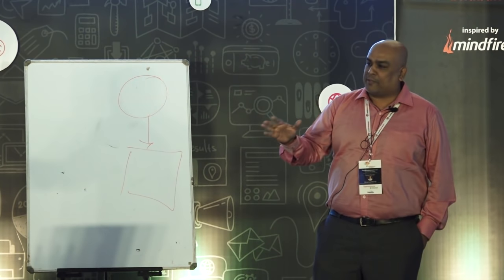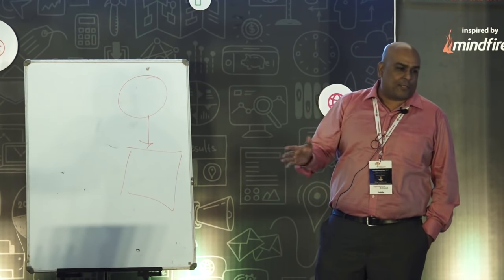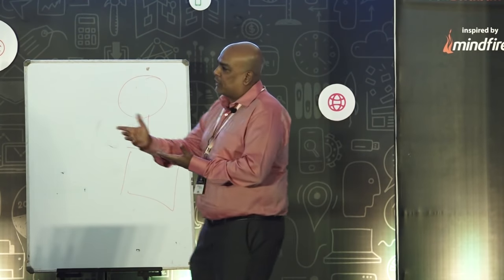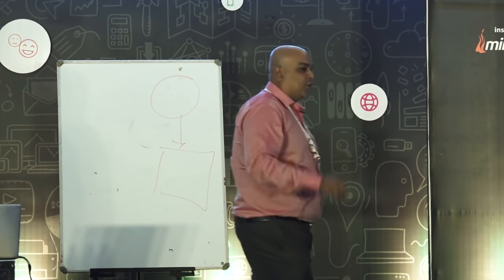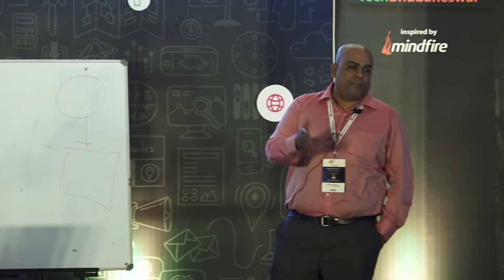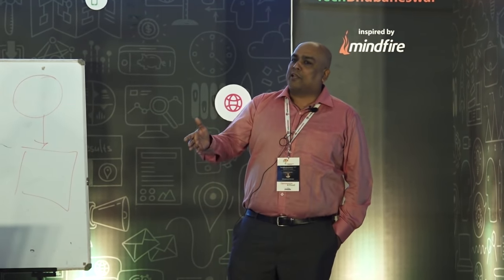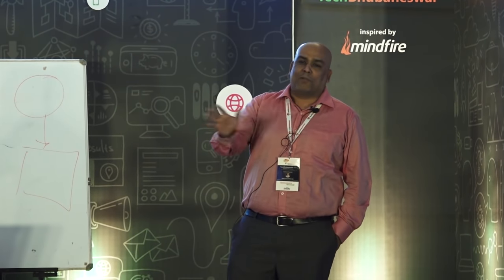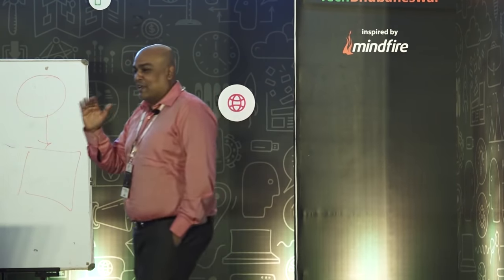MVC is an architecture pattern. There's something called a design pattern, something called an architecture pattern, and something called an architectural style — three different things. Factory and singleton are design patterns; MVC and MVP are architecture patterns; REST is an architectural style; service-oriented is an architectural style.